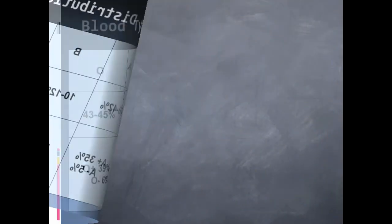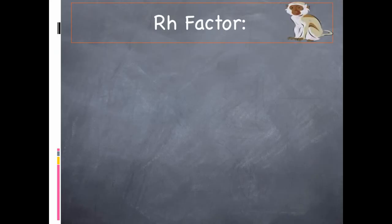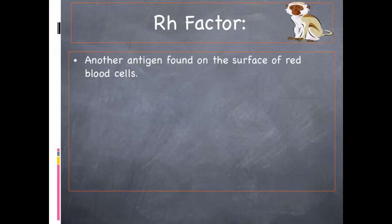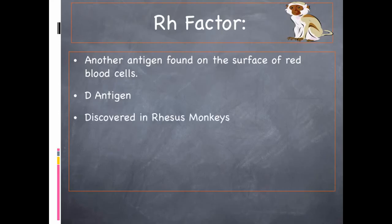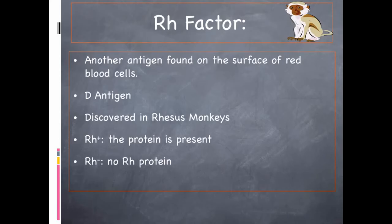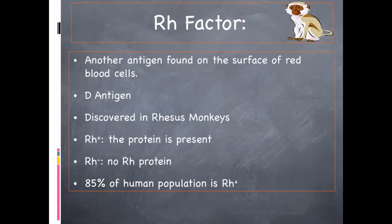What determines that positive or negative? It's something called the Rh factor, which is nothing more than another protein — another antigen found on the surface of the red blood cells. It's referred to as the D antigen. It's the Rh factor because it was first discovered in rhesus monkeys. If you are Rh positive, then you have that D antigen, that protein. If you are Rh negative, you do not. It's neither good nor bad — just another indicator, just like the A and B antigens. Approximately 85% of the human population is Rh positive.